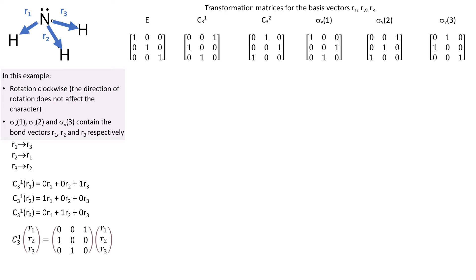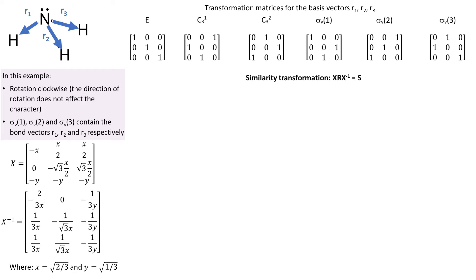So these are the remaining transformation matrices for basis vectors r1, r2 and r3. Now is the important bit. We can do similarity transformation on these transformation matrices using matrices X and X inverse. As a result, we get a new set of matrices.